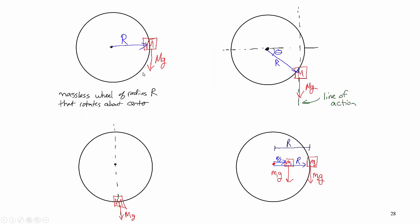We have a massless wheel with radius r, and we're going to attach one or more masses to the edge of the wheel. In this first case, we're attaching the mass at the 3 o'clock position and calculating the torque due to the weight of this mass. The force of gravity, mg, acts straight down, and the r vector points from the axis of rotation to where the force is applied. Here, all of the force is perpendicular to the r vector, so this is where the torque is greatest — it's mg times r.